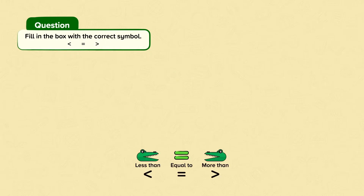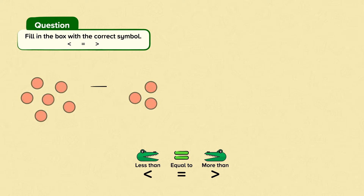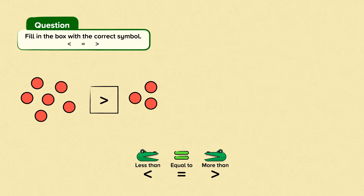Fill in the box with the correct symbol. Which side is more? Here we have six dots and here we have three dots. Which side will Charlie the crocodile want to eat? Which side is bigger? We need to use this symbol. We know that six is more than three.